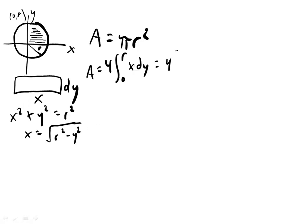And so now we can plug that in for x here. And so we're going to get the integral from 0 to r times 4 of square root r squared minus y squared times dy.